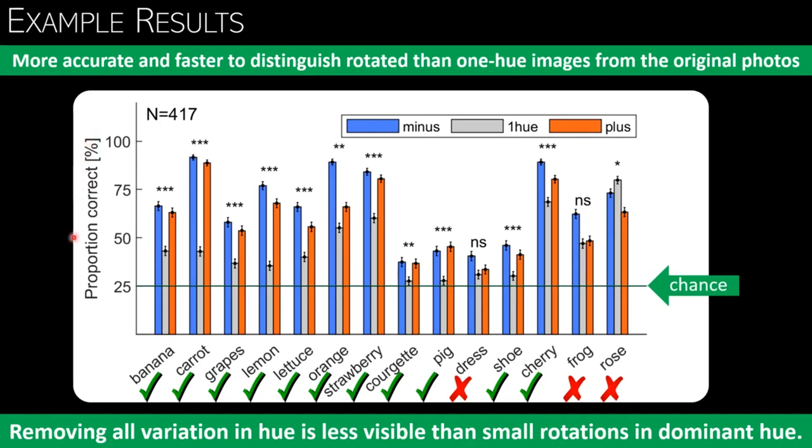Here you can see the proportions of correct answers for each object and each condition. For most objects, the one hue version was still more difficult to distinguish from the original than the rotated hue version. This can be seen by the gray bars here and here being lower than the blue and red bars here.